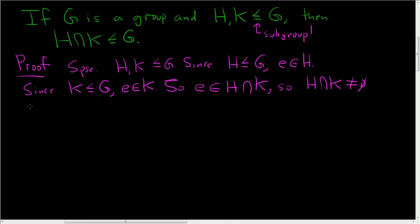Now we have to show it's closed under the group operation. Suppose we have two elements, X and Y, which reside in the intersection H intersection K. By definition of intersection, this means that X and Y are in H and X and Y are in K.